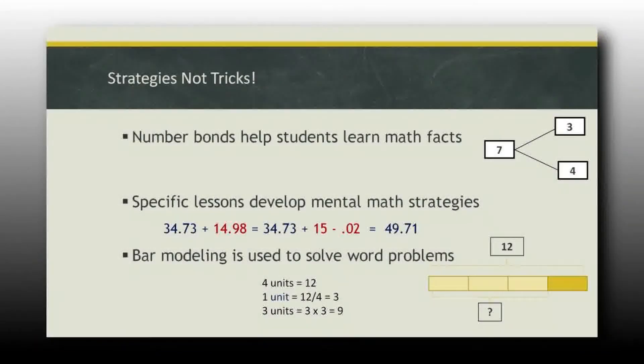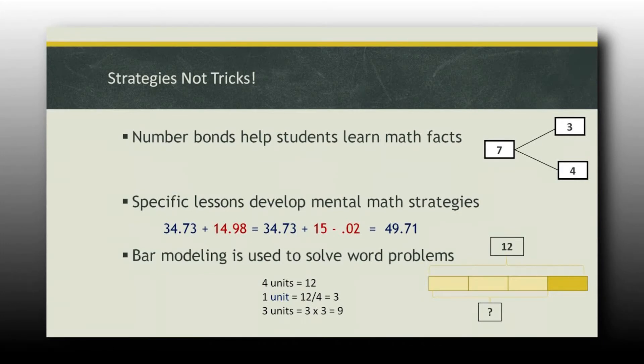Bar modeling is used to solve word problems. Bar modeling is just a pictorial, a picture drawing of the problem. So real simple here. This is a whole, this is 12 units here. I've got four units equals 12, so I divide it into four equal units. And then I can just think in my head, how much is one unit going to be?